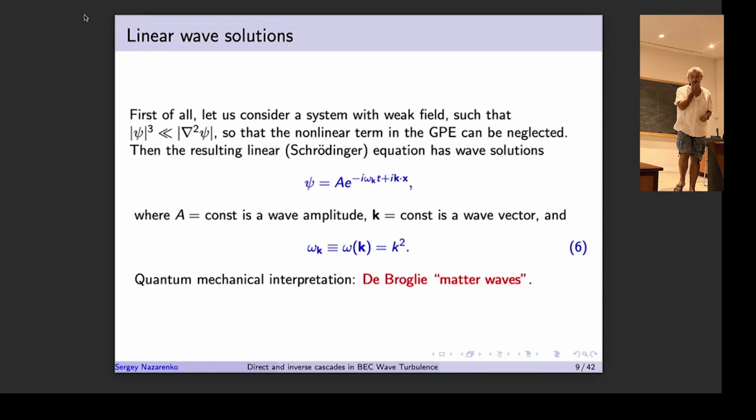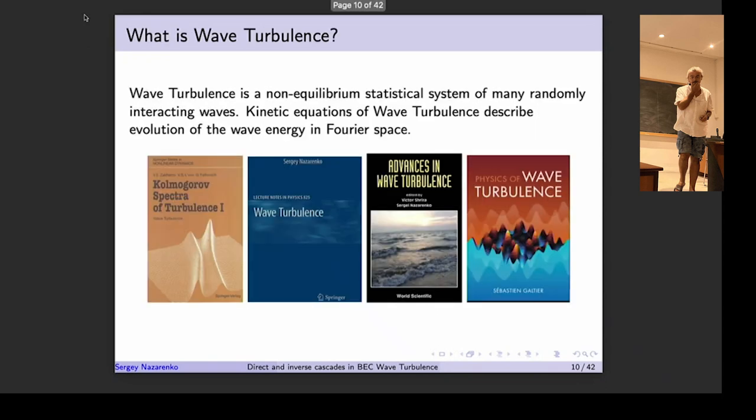This is the case of wave turbulence. The fundamental object in this case is the wave, not the vortex. We consider precisely the limit when nonlinearity is small. The matter wave has a solution with frequency equal to k-squared (wave number squared), which is the classical non-relativistic dispersion relation between energy and momentum. Wave turbulence is a non-equilibrium statistical system of many random interacting waves across a broad-band spectrum.